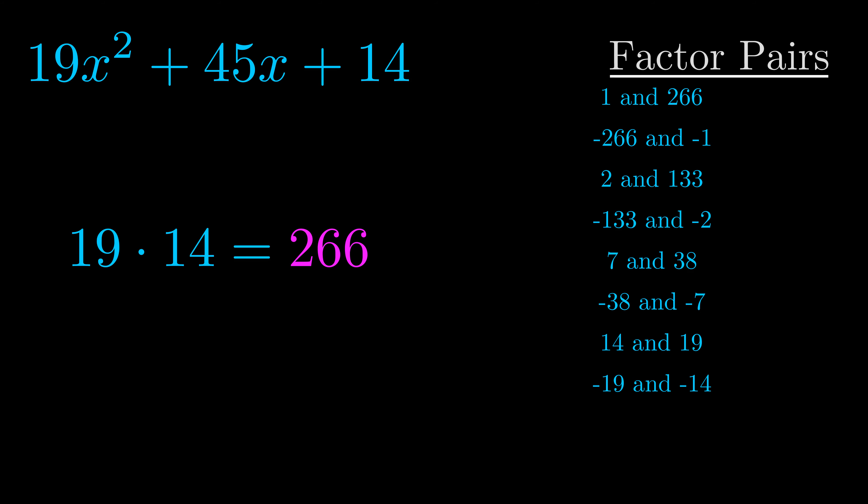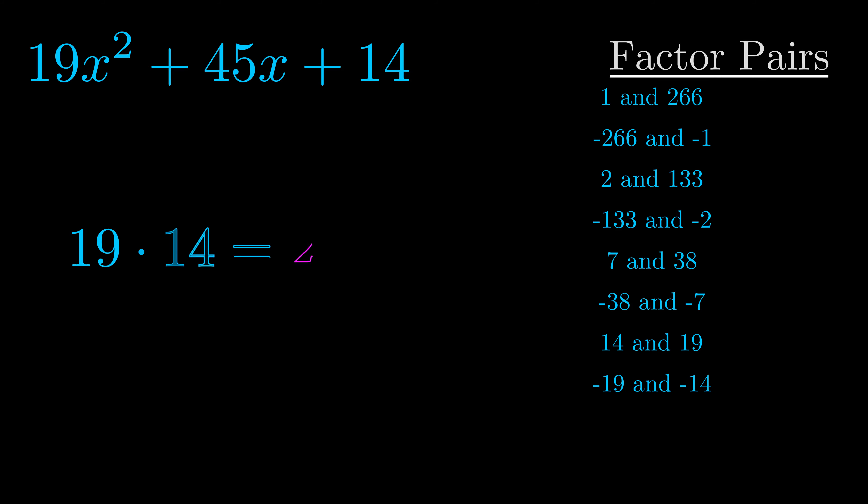Now once you have these factor pairs, the goal is to find which of these pairs adds to the b value. The b value is the coefficient on the x term. That's the middle term, the one that we haven't done anything with yet. And really this is the only factor pair that we need.